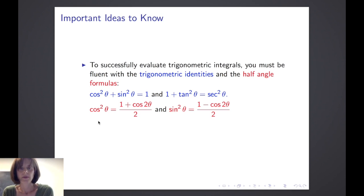Let's review some of the big ideas. To successfully evaluate trigonometric integrals, you must be fluent with the trigonometric identities and the half angle formulas. Recall that the important trigonometric identities are cosine squared theta plus sine squared theta equals 1, and 1 plus tangent squared theta equals secant squared theta.